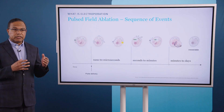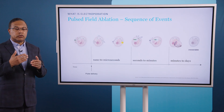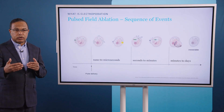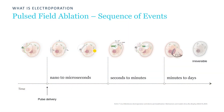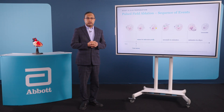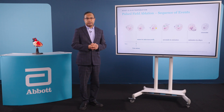And then eventually, the steps that lead to irreversible cell death or apoptosis may take anywhere from minutes to days. In fact, there is some data suggesting that it can take seven to ten days for an electroporated lesion to fully mature in cardiac cells.